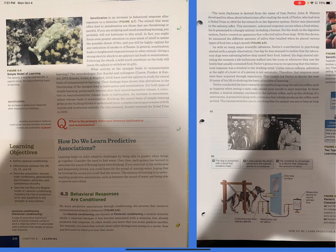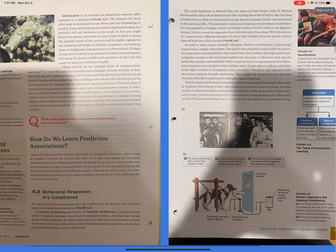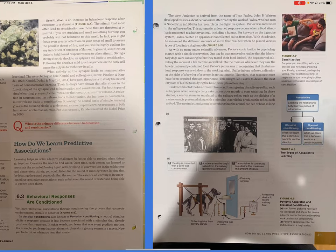Section 6.3: Behavioral responses are conditioned. We learn predictive associations through conditioning, the process that connects environmental stimuli to behavior, Figure 6.8. In classical conditioning, also known as Pavlovian conditioning, a neutral stimulus elicits a response because it has become associated with a stimulus that already produces that response. In other words, you learn that one event predicts another. For example, you learn that certain music plays during scary scenes in the movie. Now you feel anxious when you hear that music.